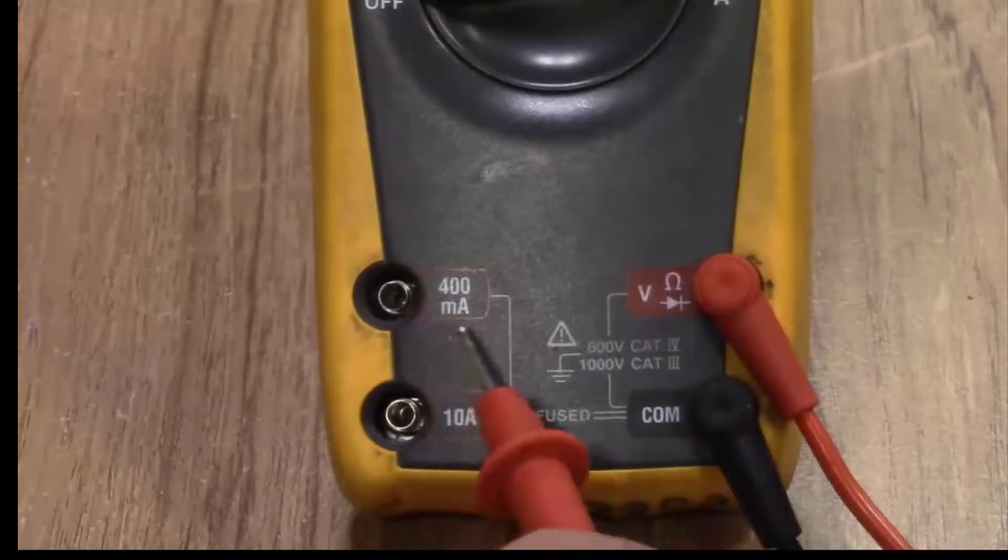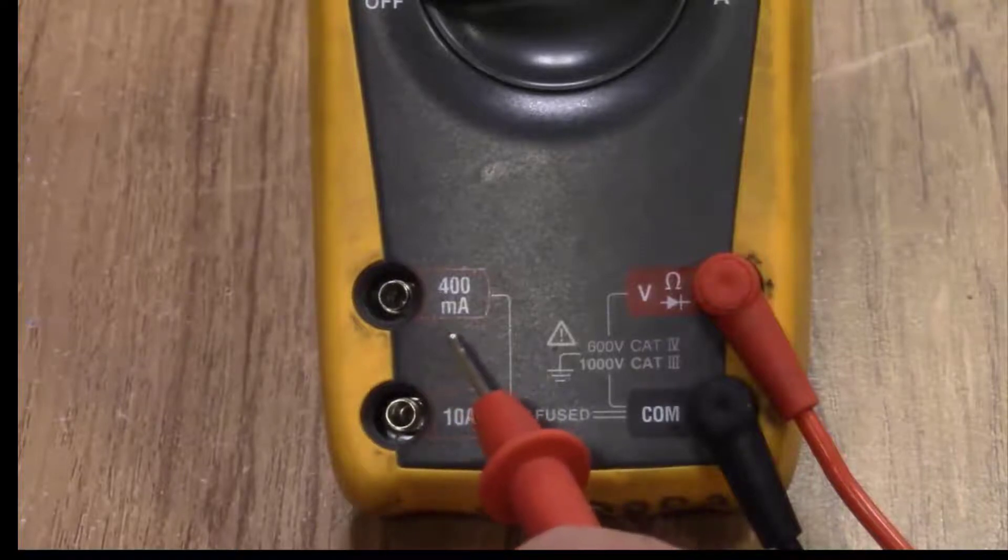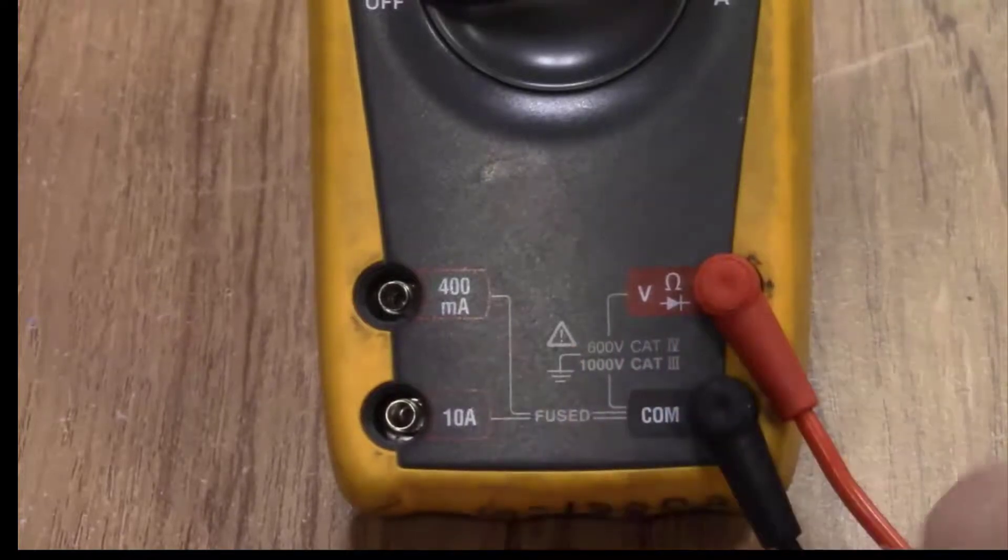Anything over 400 milliamps you're going to use the 10 amp jack. Anything for 400 milliamps and under you're going to plug it into the 400 milliamp jack to get a more accurate reading.